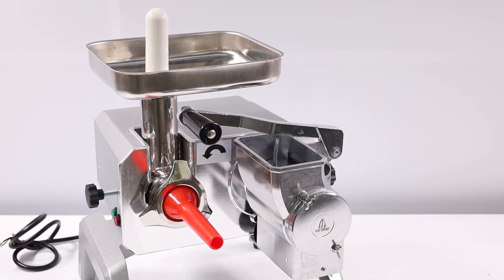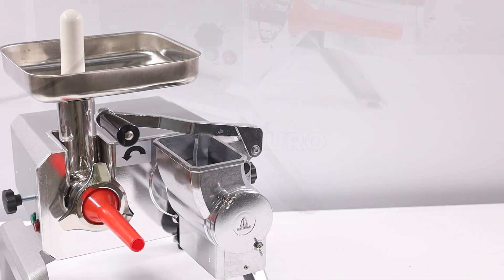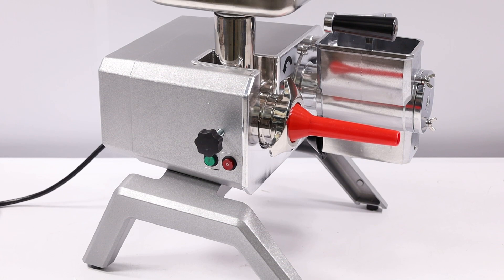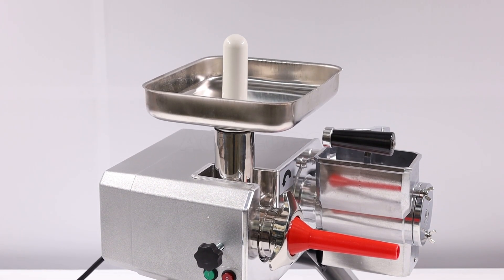Das Set von Zubehörteilen, das mit dem Fleischwolf geliefert wird, darunter Fleischwolf, Reibe, Weichmacher und Gemüseschneider, verwandelt ihn in ein Multifunktionswerkzeug, das in der Lage ist, die Bedürfnisse eines jeden zu erfüllen.